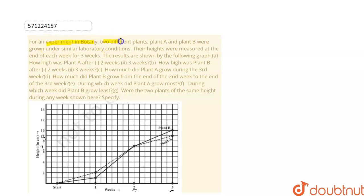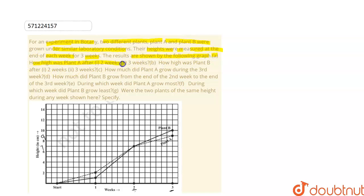Here, the given question is from an experiment in botany. Two different plants, Plant A and Plant B, were grown under similar laboratory conditions. Their heights were measured at the end of each week for three weeks. The results are shown in the following graph. The first part of the question asks: how high was Plant A after two weeks and after three weeks?